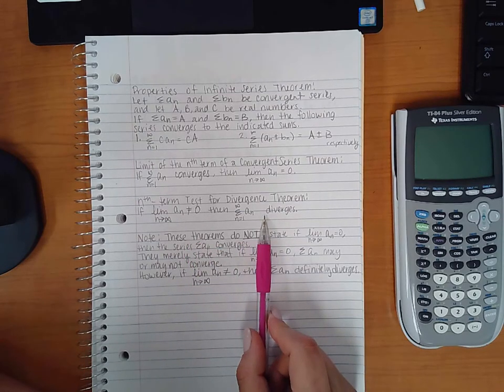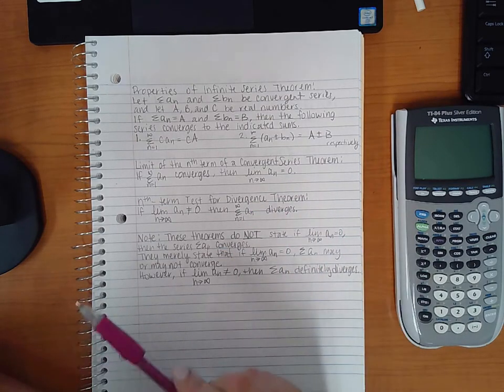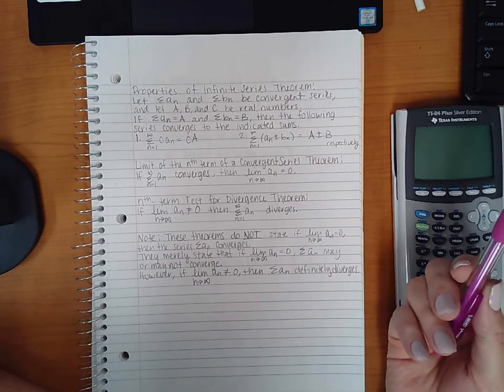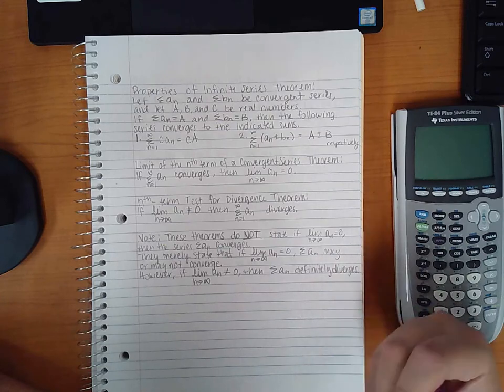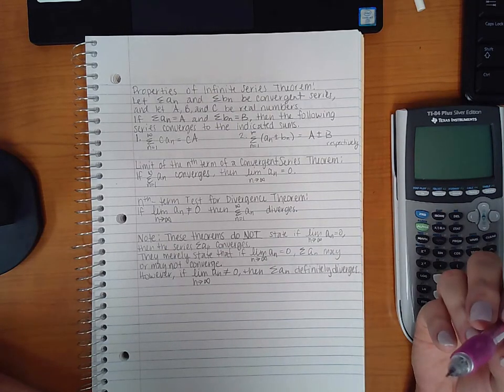But if you take the limit and you get zero, all it means is that it could converge or it could diverge still. It's still a question up in the air. And depending on how you find convergence, there's a whole bunch of methods that we'll learn in the rest of this chapter.